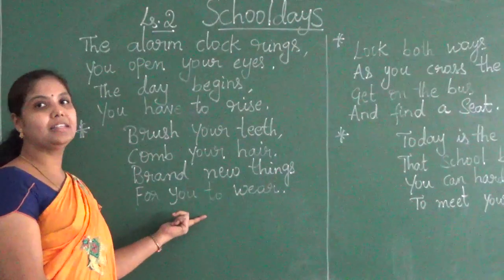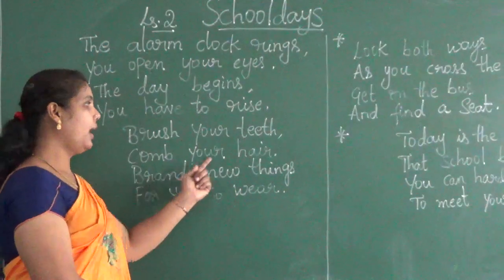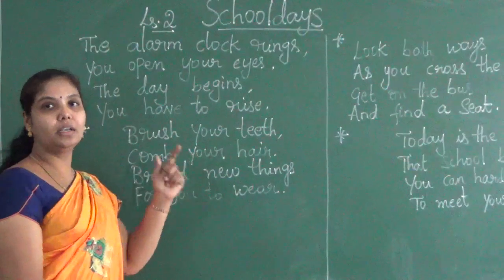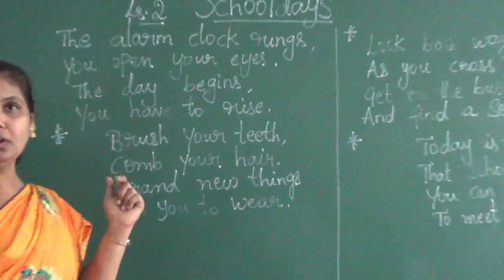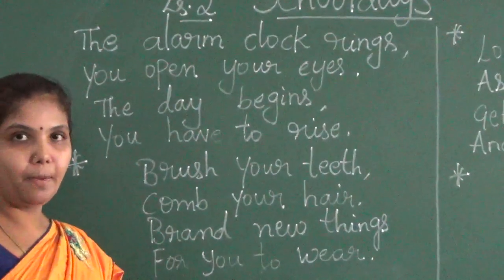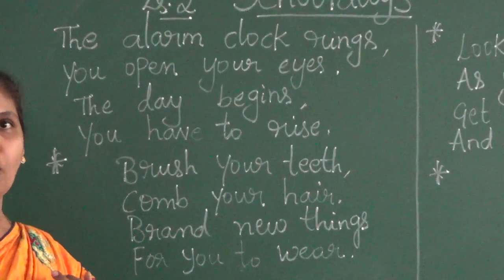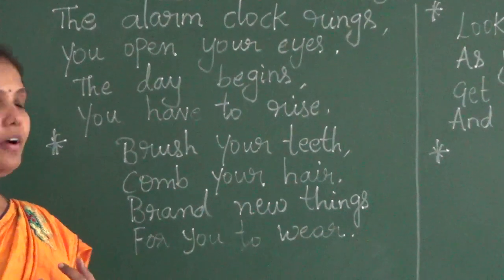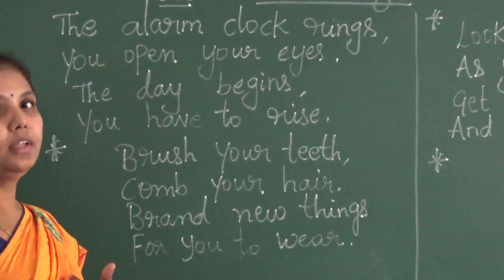Once again we will read the second stanza: Brush your teeth. Comb your hair. Brand new things for you to wear. So what are the things we are doing to get ready for school? We are taking a bath, wearing neat and clean uniform, having a healthy breakfast, and wearing proper uniform. Then you are ready to go to school.